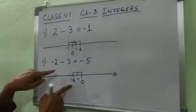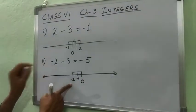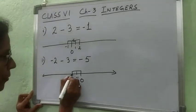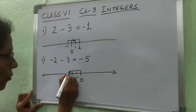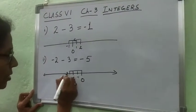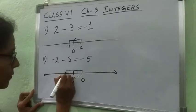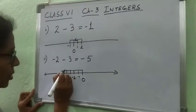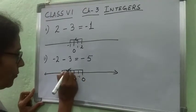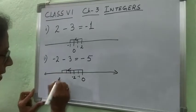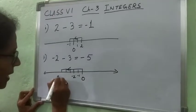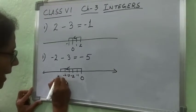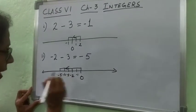After reaching minus 2, then again minus 3. From minus 2, move 1 step, 2 steps, 3 steps in the negative direction. You have to give the direction arrow this side — minus 3, minus 4, minus 5. So the answer is minus 5.